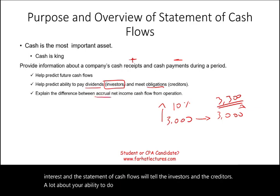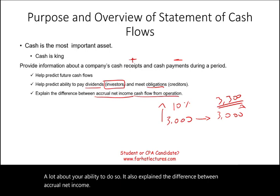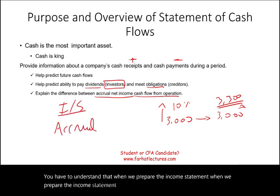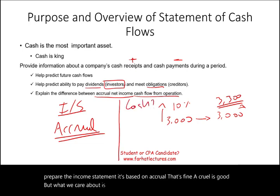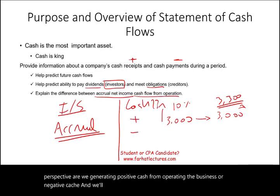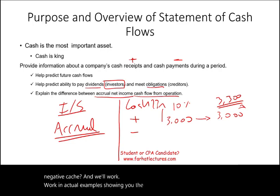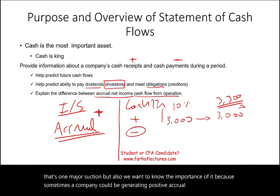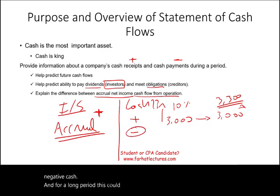The statement of cash flows also explains the difference between accrual net income and cash flow from operations. When we prepare the income statement, it's based on accrual — that's fine, accrual is good. But what we care about is how we're doing on a cash flow basis. From a cash perspective, are we generating positive cash from operating the business? A company could be generating positive accrual income but negative cash, and for a long period, this could be a risky business.